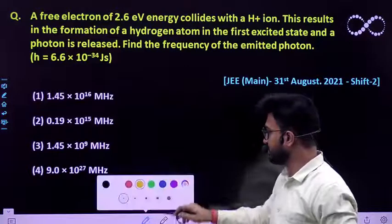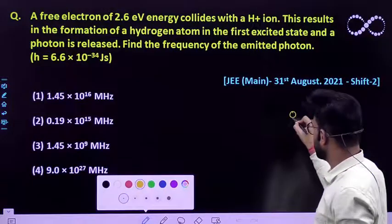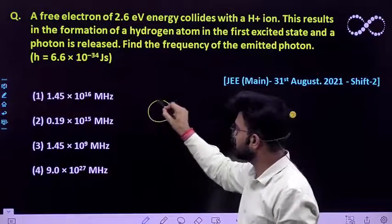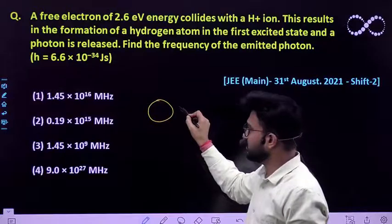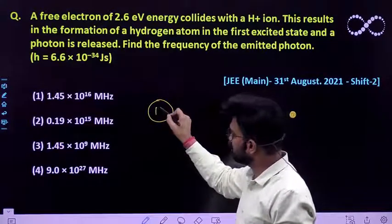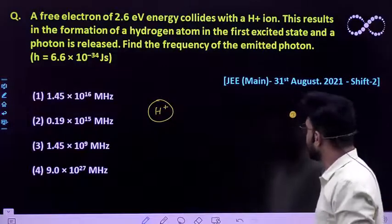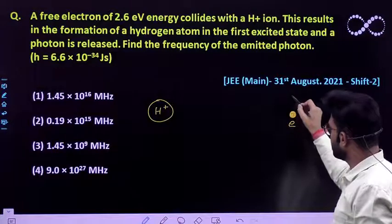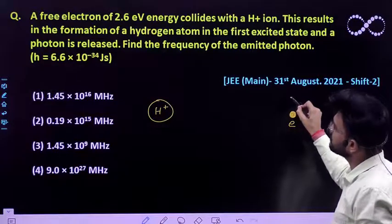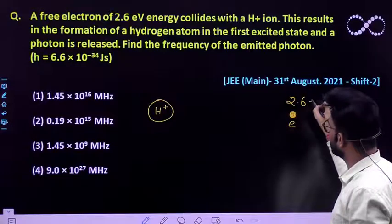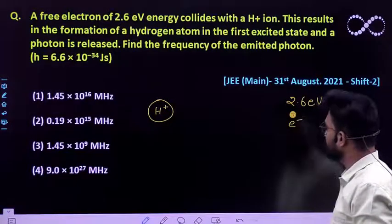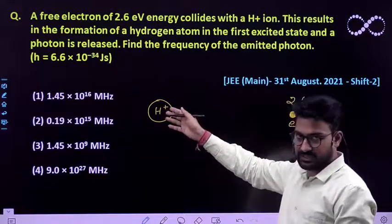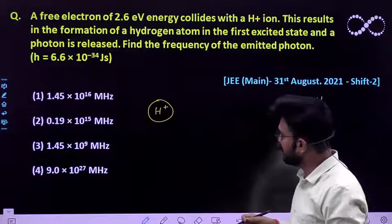So initially you have been given an electron — let this be the electron — and an H+ ion, which is devoid of its electron. This electron has energy whose magnitude is 2.6 electron volt. Obviously, if this electron comes to this H+ ion, it will form a hydrogen atom.